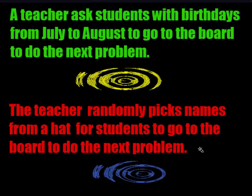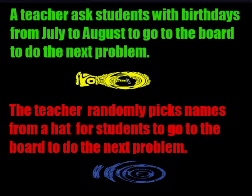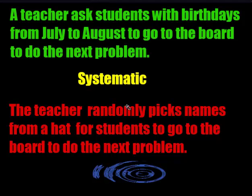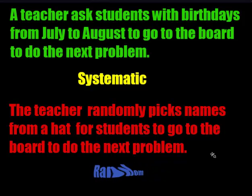What sampling method is this: a teacher asks students with birthdays from July to August to go to the board. Is it totally random, double random, or some kind of system? There's a system involved, so it would be systematic. Next example: the teacher randomly picks names from a hat for students to go to the board. Is it random, double random, or a system? There's just one layer of randomness, so that would be a random sample.